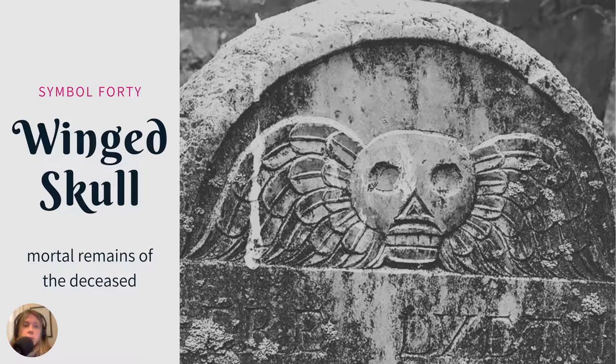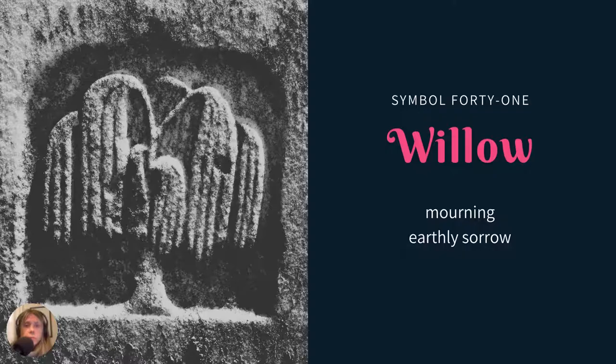Winged skull or winged death's head represents the mortal remains of the deceased. Super popular especially in colonial times — you'll find these on a lot of tombstones up in New England. And finally, the weeping willow represents mourning and earthly sorrow. Weeping willows are in cemeteries a lot; they just represent sadness for obvious reasons.